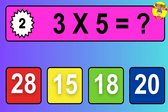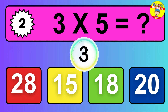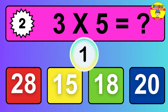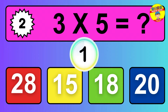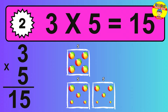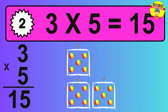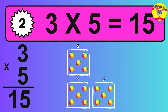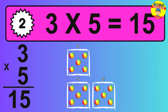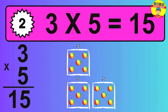Question 2. 3 times 5 equals what? The answer is 3 times 5 is 15. To calculate, we have 3 groups with 5 balls each one. So, how many balls do we have? 15 balls.